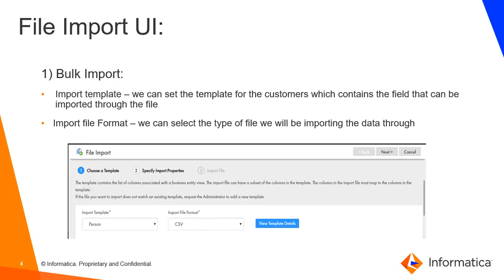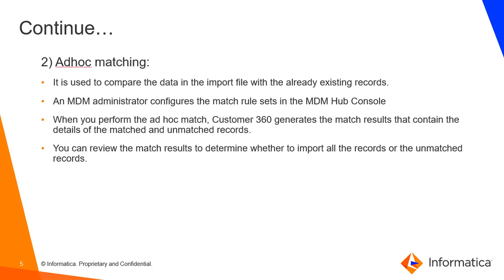Now we'll talk about the file import UI. This is how the file import UI looks in the Customer 360 interface. First is the bulk import — here we have two things: the import template and the import file format. In the import template we can set the template for customers, which contains the fields that can be imported through the file. In the import file format we can select the type of file — that is CSV. We can click on 'View Template Details' to see the different fields in the template, and then go to next to import the file.